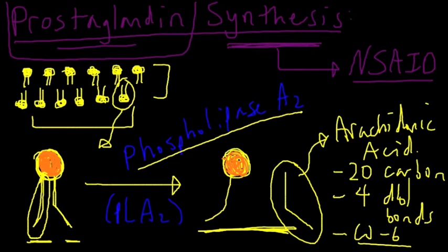Now, I will highlight, just for those of you who are interested, I know it's not the topic of this video series, but phospholipase A2 is actually the enzyme that is targeted by corticosteroids.